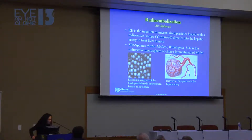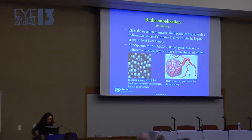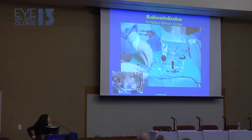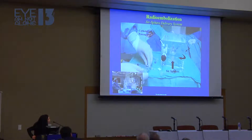Radioembolization, or SIR-Spheres, is the injection of micron-sized particles loaded with the radioactive isotope yttrium-90 directly into the hepatic artery to treat liver tumors. The radioembolization particle of choice is SIR-Spheres. We do everything under image guidance. The microspheres look like little grains of sand — they're really tiny — and we deliver them right into the hepatic artery via the common femoral artery access site.